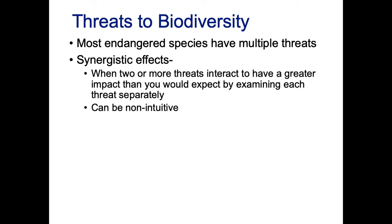We also get something called synergistic effects — that's when two or more threats interact to have a greater impact than you'd expect by examining each separately, and these can be non-intuitive. For example, maybe land use affects a population by one and chytrid affects it by one, but when combined the effect is three. One plus one does not equal three, meaning the combined effect is much larger than expected.